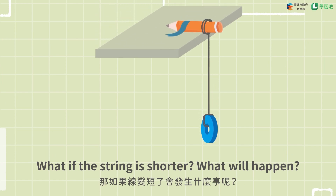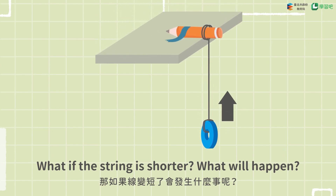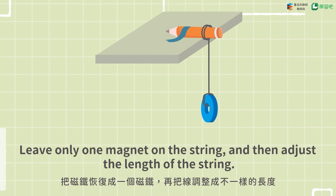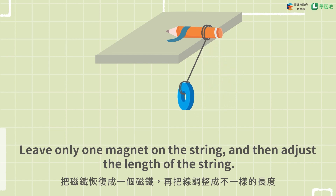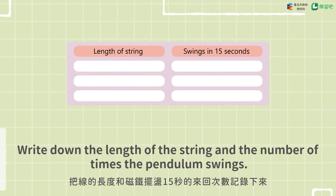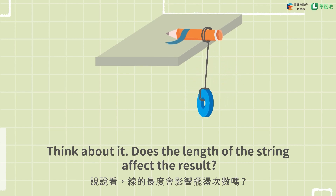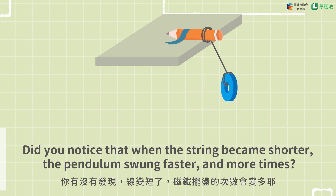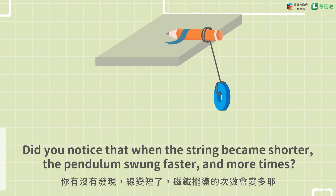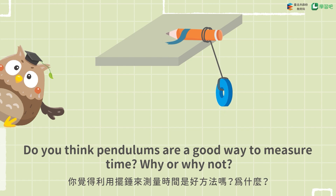What if the string is shorter? What will happen? Leave only one magnet on the string and then adjust the length of the string. Write down the length of the string and the number of times the pendulum swings. Think about it — does the length of the string affect the result? Did you notice that when the string became shorter, the pendulum swung faster and more times? Do you think pendulums are a good way to measure time? Why or why not?